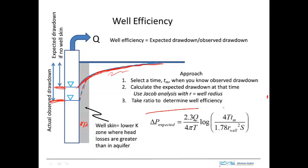The Jacob analysis is set up to calculate the drawdown at a particular time. The important thing to recognize is that the radial distance used here is the radius of the well. In the previous analysis, we used the radial distance of the monitoring well where our data were collected. In this case, we need to use the radius of the well itself.